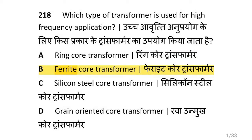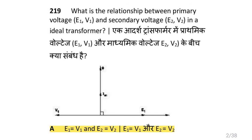We are going to see transformers. Which type of transformer is used for high frequency applications? That is ferrite core transformer. What is the relationship between primary voltage E1 (induced voltage), V1 (supply voltage), and secondary voltage E2 (induced secondary voltage), V2 (secondary output voltage)? In an ideal transformer, E1 is equivalent to V1 and V2 is equivalent to E2 — that is the equivalence or balancing.